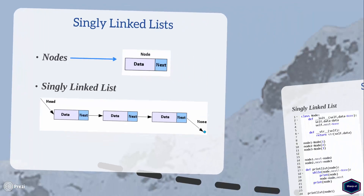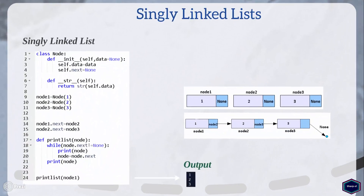Now let's create a singly linked list. Here I have created a class called node which contains two attributes: data and next. The data attribute stores the actual value, and in my example it will be an integer value. The next attribute stores the address of the next node in the sequence. By default I have set the next attribute to none. My node class also contains the magic method __str__ so that when I print a node object it will only print the data attribute value.